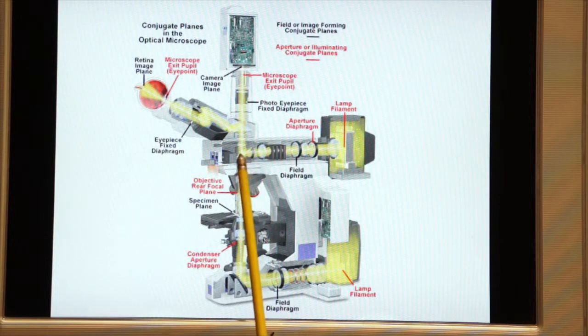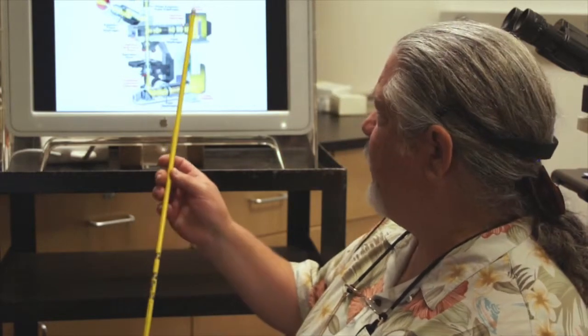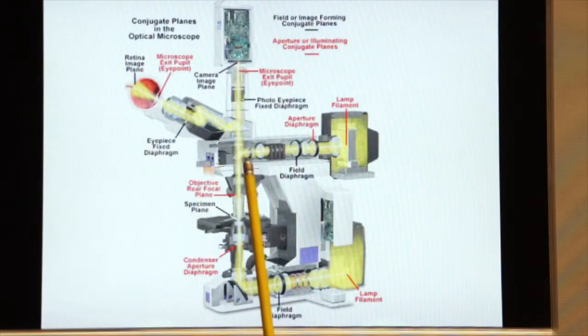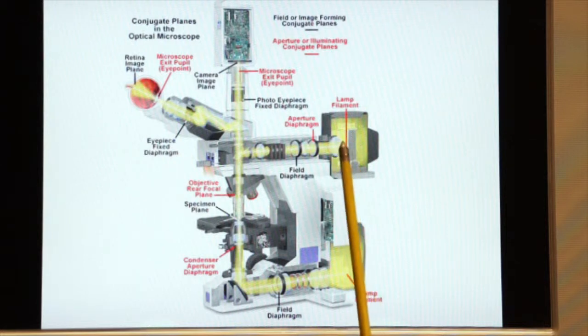Now this microscope also does reflected light. Remember in fluorescence we're using reflected light to illuminate our specimen. So this is the fluorescent vertical illuminator. Here we have the lamp housing, which has that mercury bulb that we're going to discuss more in a few minutes. It produces a lot of light which travels through the vertical illuminator.